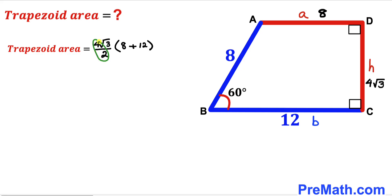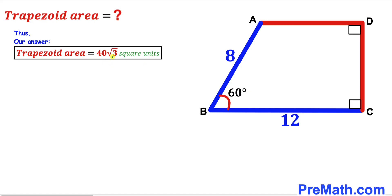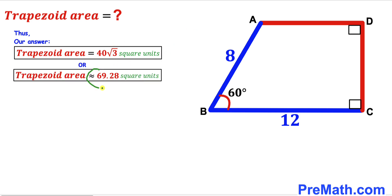We see that 8 plus 12 equals 20 and 4 divided by 2 equals 2, so we get 2 times square root of 3 times 20, which gives us 40 times the square root of 3 square units. Therefore the area of trapezoid ABCD is 40√3 square units, approximately equal to 69.28 square units. Thanks for watching and please subscribe for more videos!